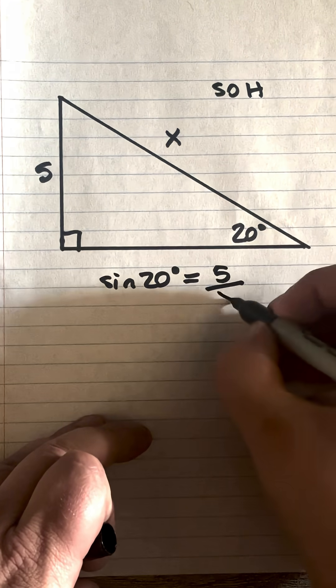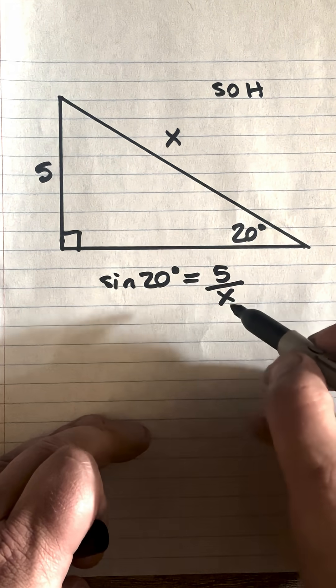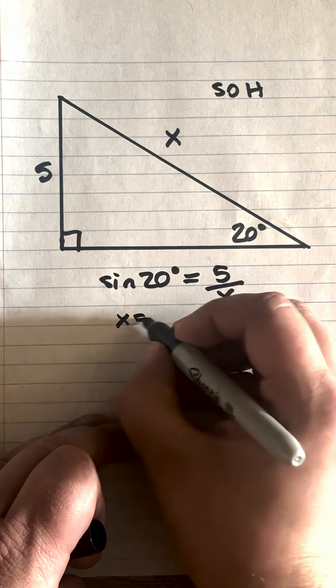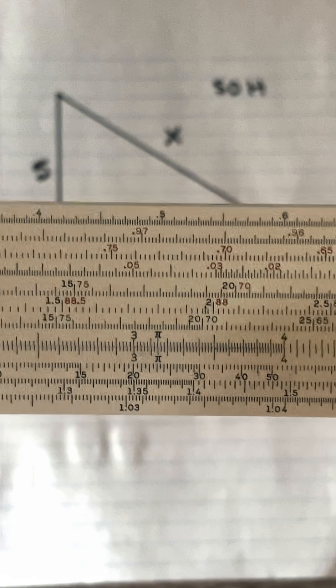Now, as we've said in other videos, if x is on the bottom, you can just swap it with sine 20. So that changes to x equals 5 over sine 20. On our slide rule, we'll make sure the C and D scales are lined up.